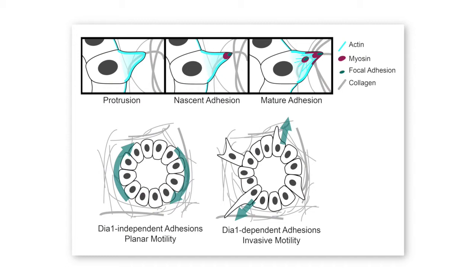These adhesions may be sufficient for DA1-deficient cells to move within the plane of the epithelium, but they are too weak and unstable for the cells to move out into the matrix and initiate branching morphogenesis. This suggests that mature focal adhesions — which are more stable, have a different composition, and require DA1 — are really essential for stabilizing cell adhesion to fibrillar matrices.